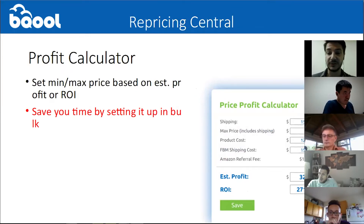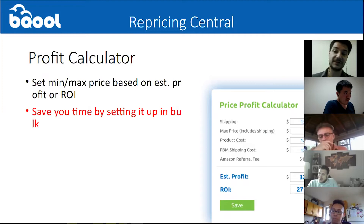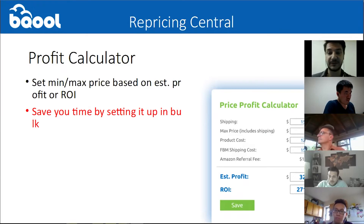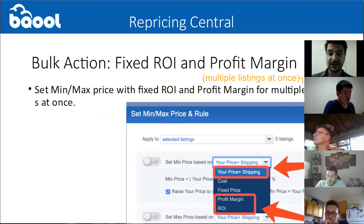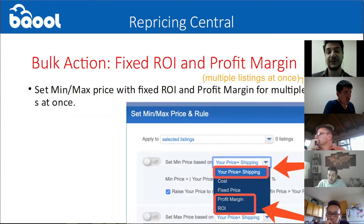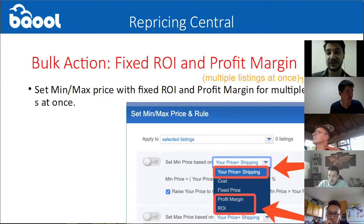You're going to take into consideration all of your fees — the Amazon fees, the FBM shipping costs, and all of that. You can base this calculation on an estimated profit, a profit margin, or even the return on investment ROI. You can do this individually or in bulk. We have advanced bulk actions. The most popular one is to calculate min and max prices in bulk on multiple listings with a fixed ROI or a profit margin. This is an advanced feature that we think is a key feature for us.